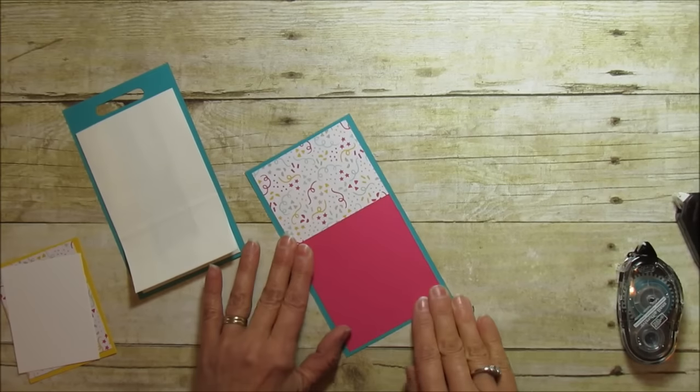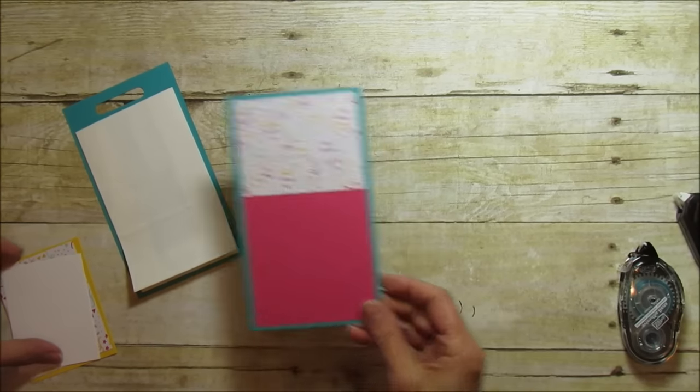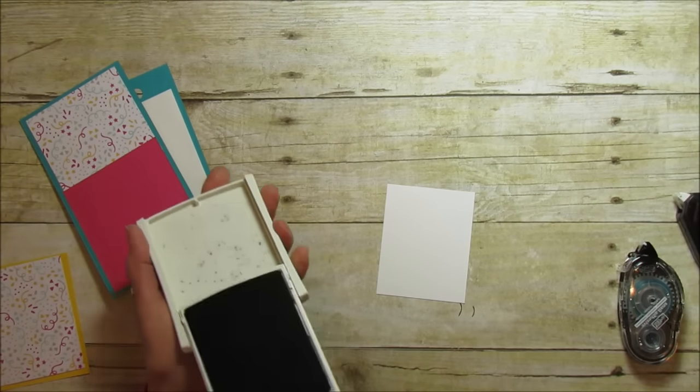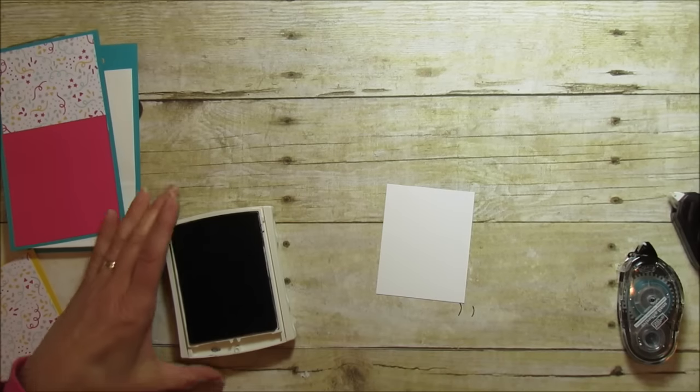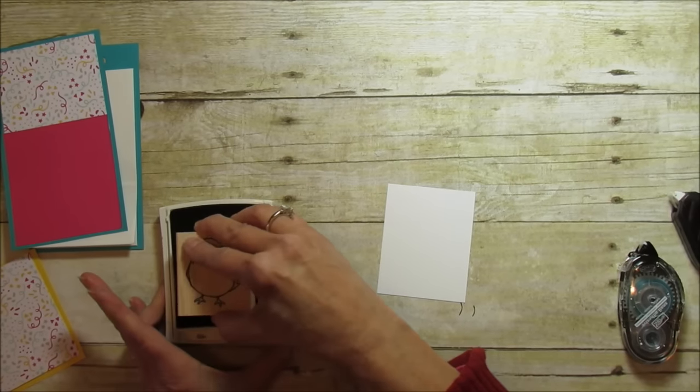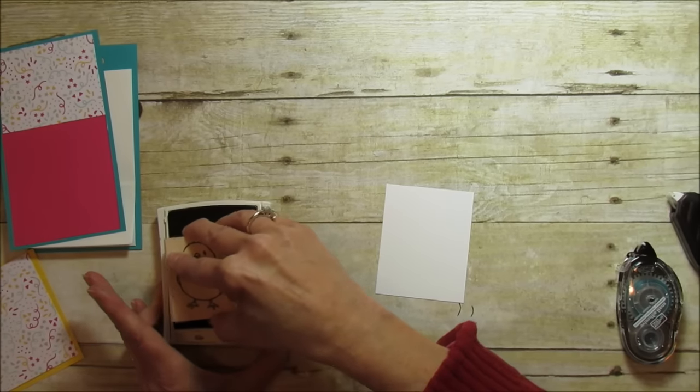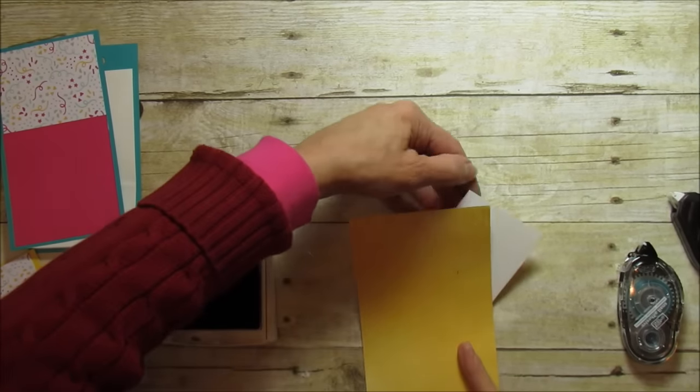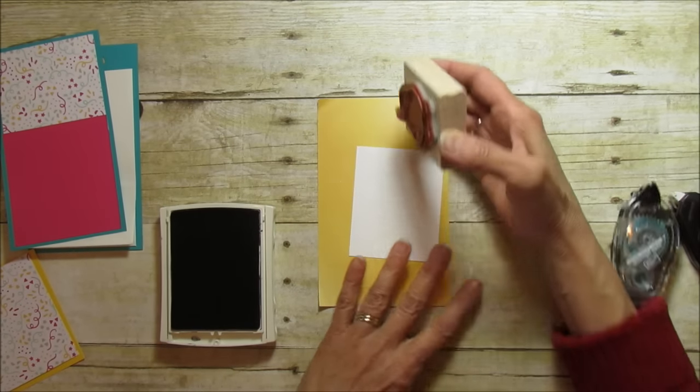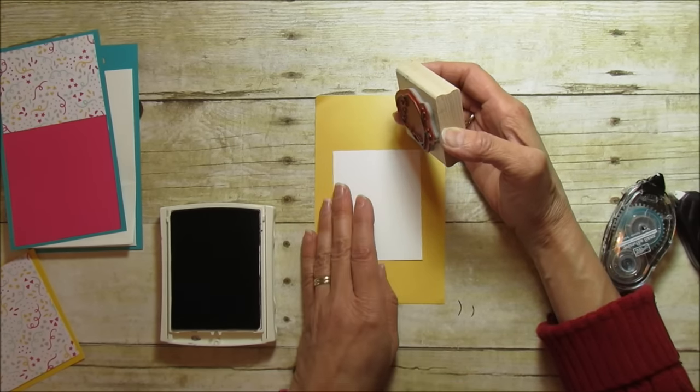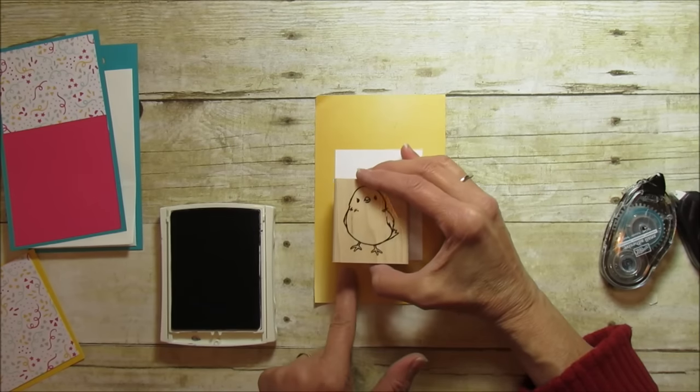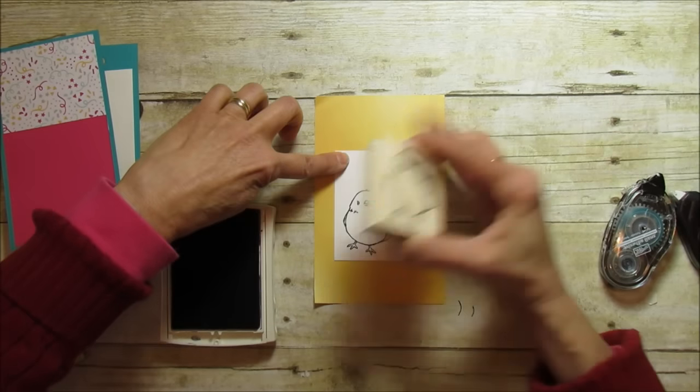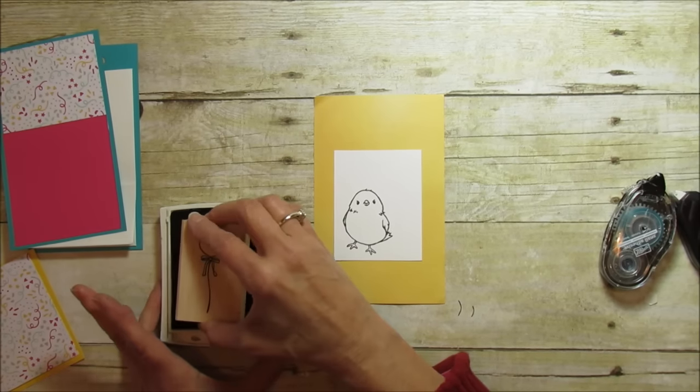And then let's go ahead and stamp before we do anything else. So I'm using my basic black archival ink and I'm going to stamp the little bird here. I want to grab really quickly a piece of scrap paper here because I don't want to get it on my tabletop. And to get the balloon and him in here you have to line this up with the very bottom edge so he's down at the bottom so we have room for the balloon. It's a little tricky to get the balloon when these are not photopolymer or clear stamps.